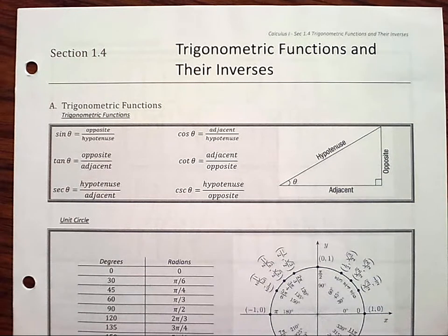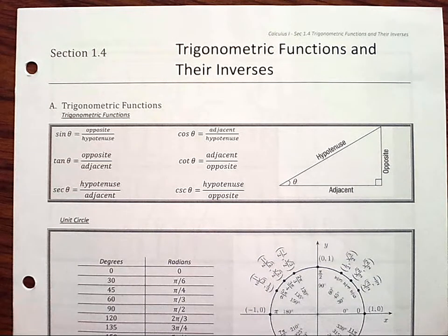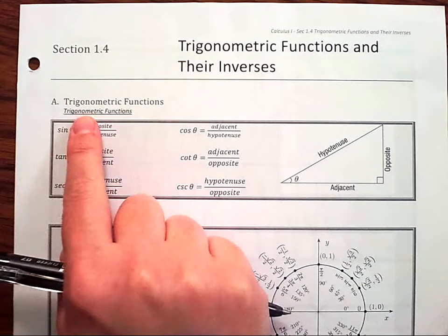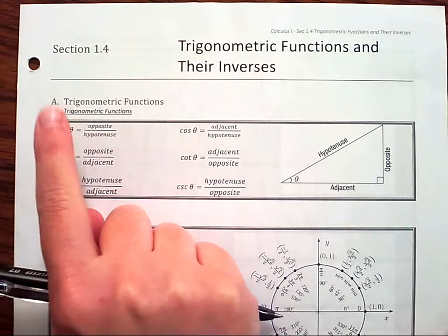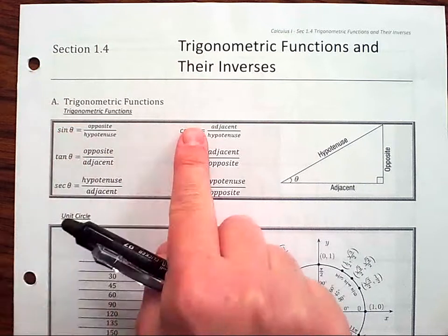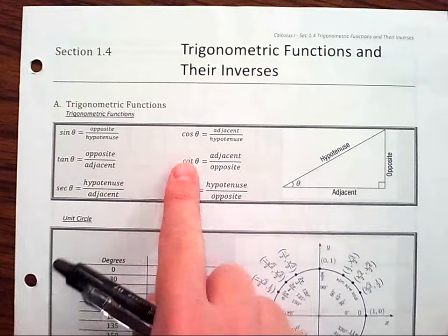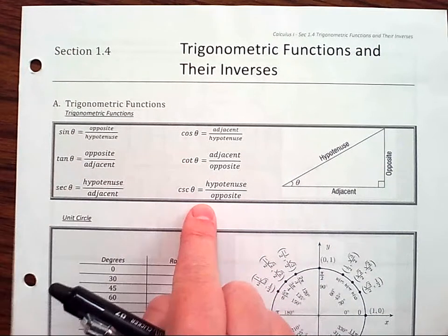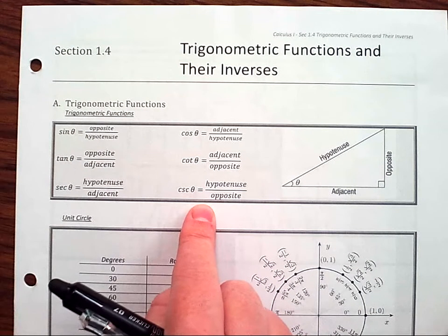Section 1.4 is trigonometric functions and their inverses. We briefly talked about trigonometric functions: we have sine, cosine, tangent, cotangent, secant, and cosecant.